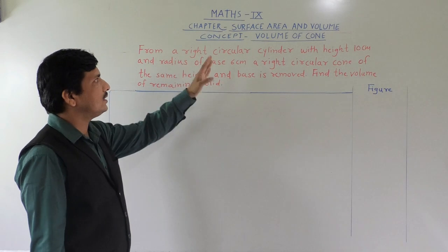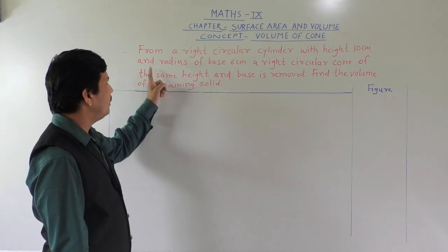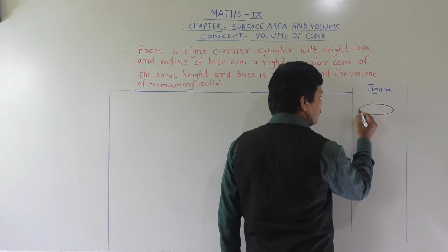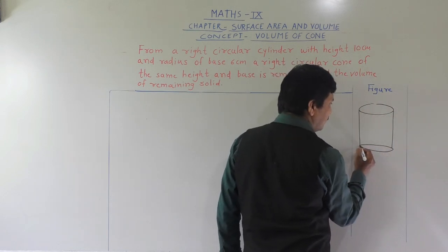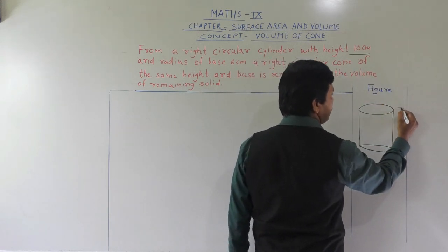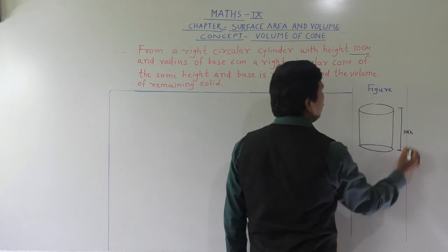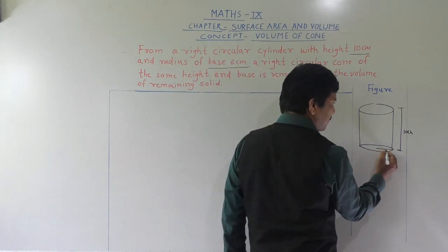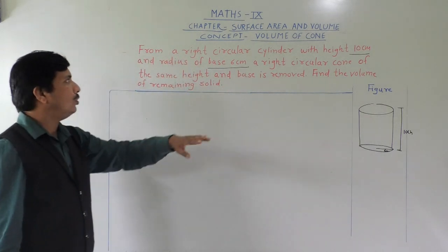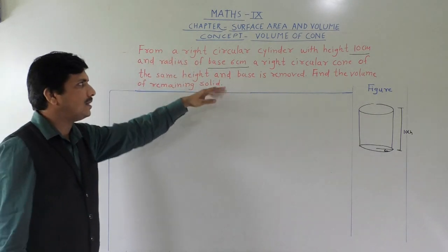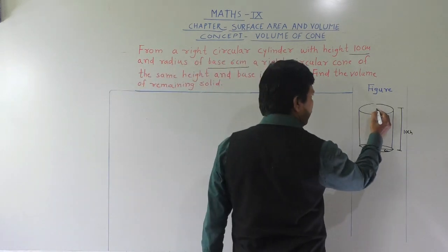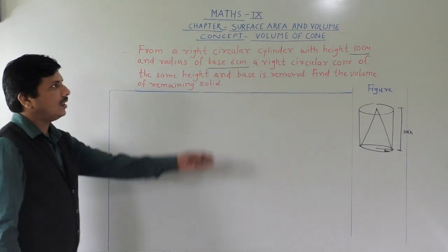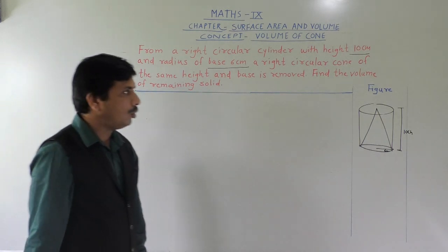What is given here? From a right circular cylinder with height 10 centimeter and radius of base 6 centimeter. There is a cylinder whose height is given — 10 centimeter — and base radius is given 6 centimeter. The right circular cone of the same height and same base is removed, so height is same. What they are asking: find the volume of the remaining solid.